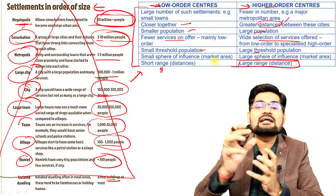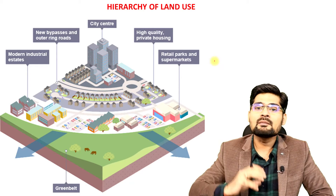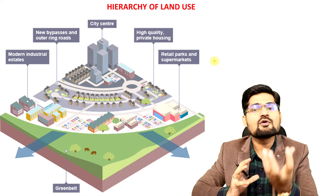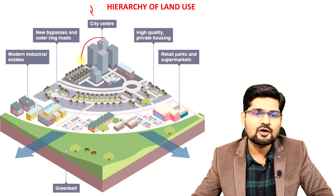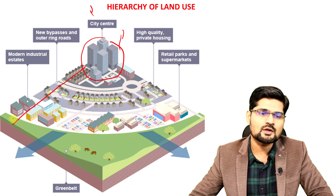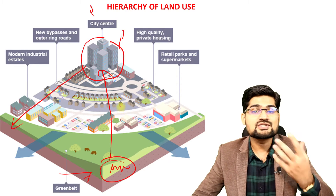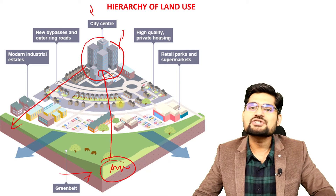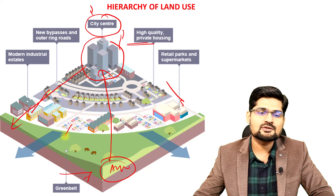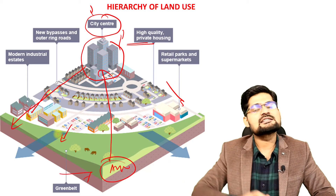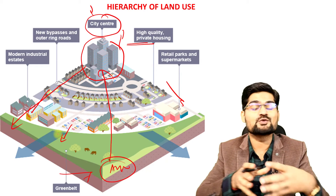A hierarchy of land use also exists from the outskirts of a city to its central part. The city center is the biggest marketplace. As you move from the green belt or agricultural land toward the city center, land use changes. You observe high-quality private housing, then supermarkets and retailing closer to the center, and considerable land use change toward the outskirts. Many models and theories look into this particular hierarchy of land use.